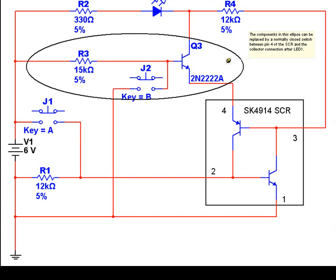But you could basically take the output from pin four, or excuse me, the connection from pin four and the connection just to the right of LED one up there and simply put in a normally closed switch that when you pressed it would open the circuit and turn off the SCR.